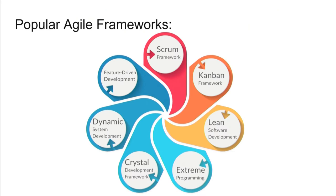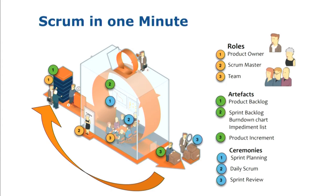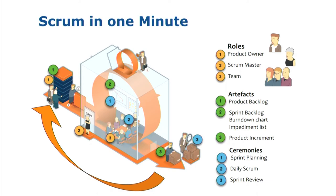These are some of the popular Agile frameworks: Scrum, Kanban, Lean, Extreme Programming, FDD, DSD, CDF. But we will be talking about Scrum and Kanban today. Scrum is an iterative Agile software development framework for managing software development. In Scrum, there are different roles which team members play: one is the Product Owner, another is the Scrum Master, and another is the Team.